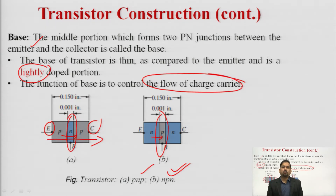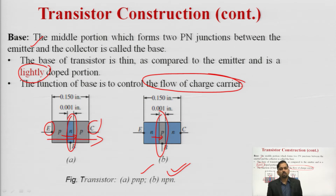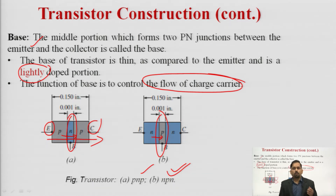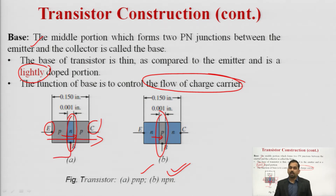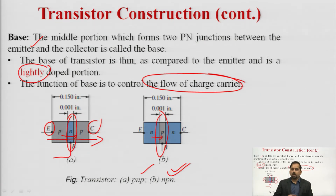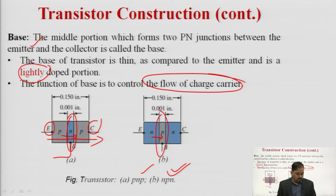The control function of the base is also the advantage of a 3-terminal device over a 2-terminal device — we can control the flow between two terminals using the third terminal. In a diode, which is a 2-terminal device, we cannot control the flow of electrons between the P and N regions.